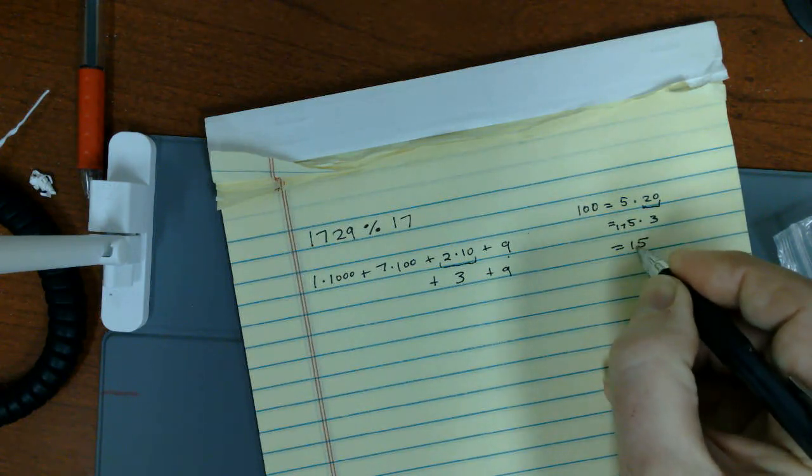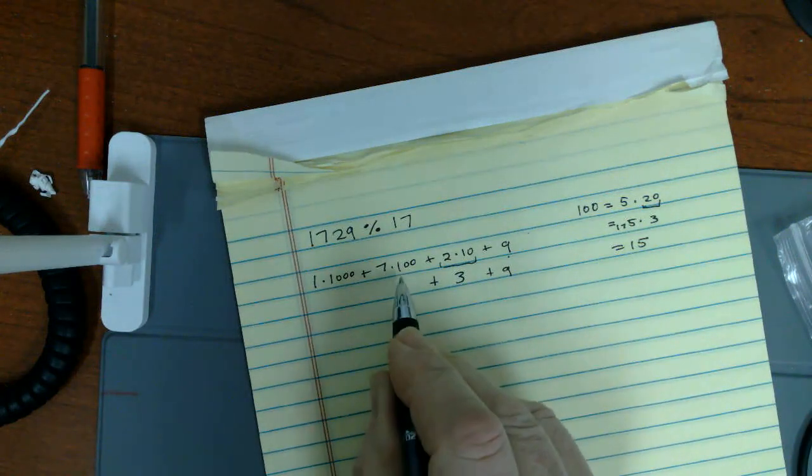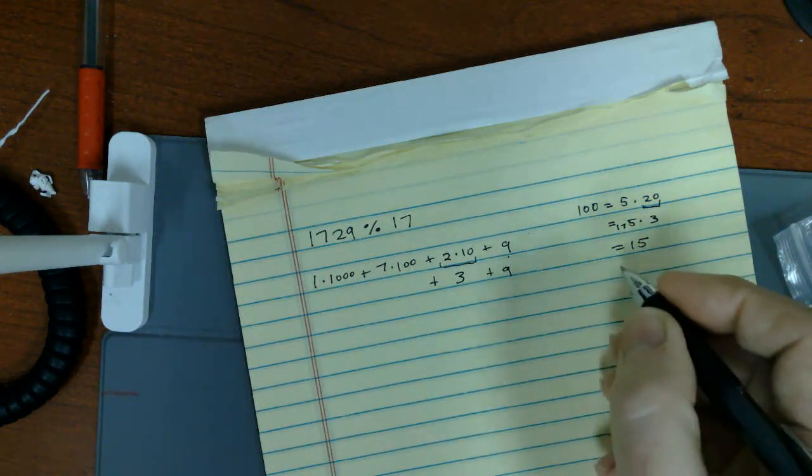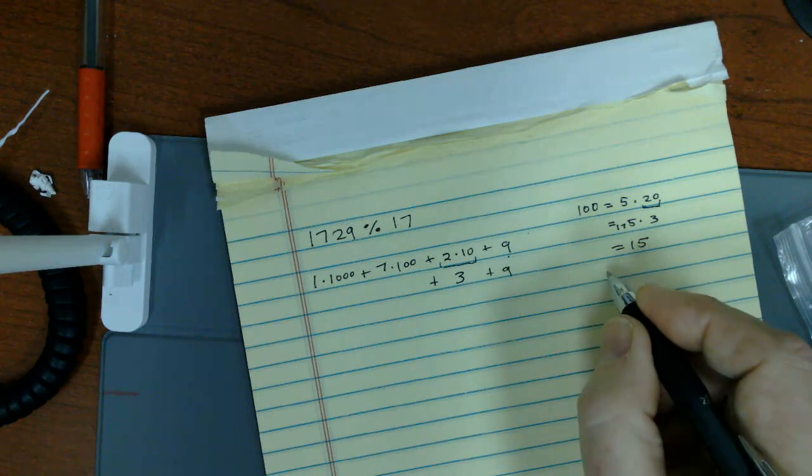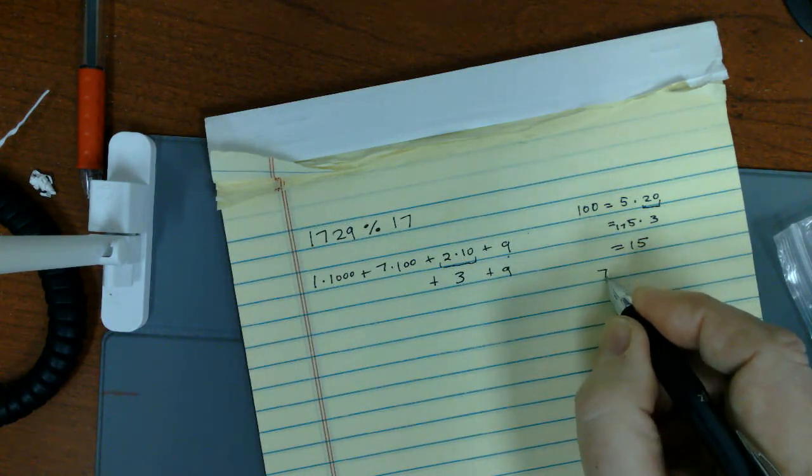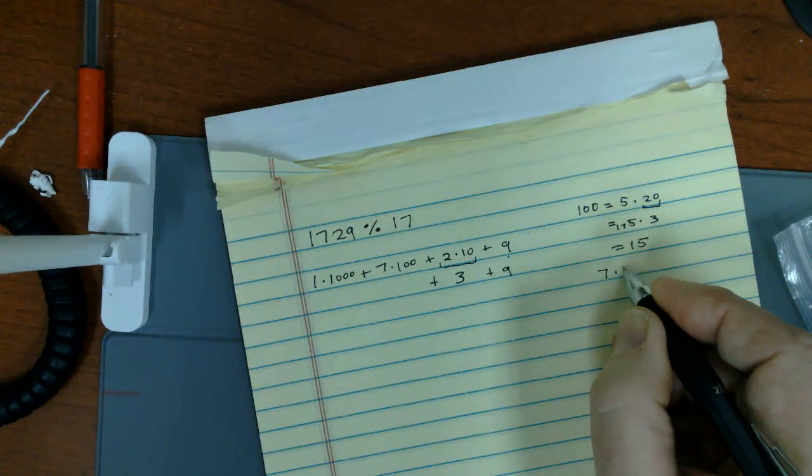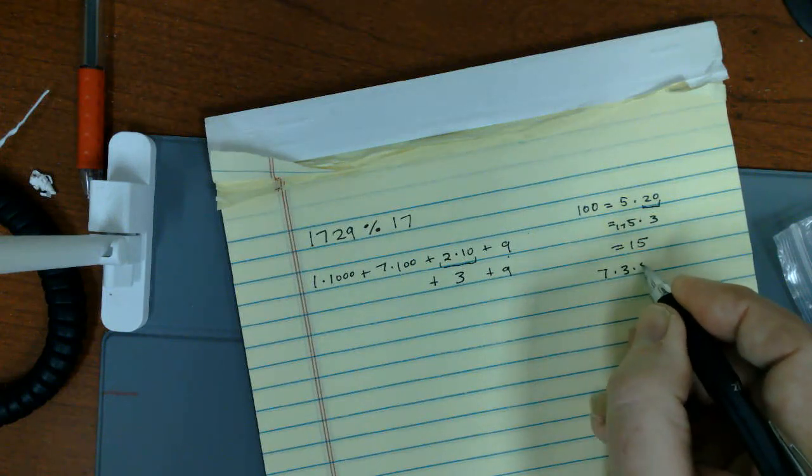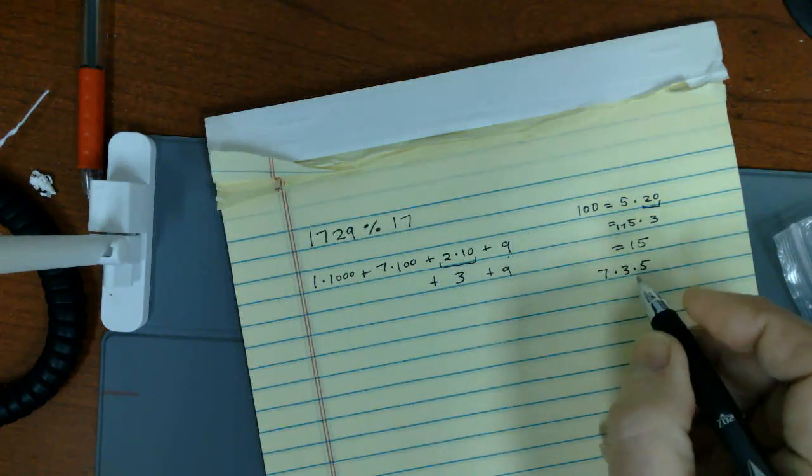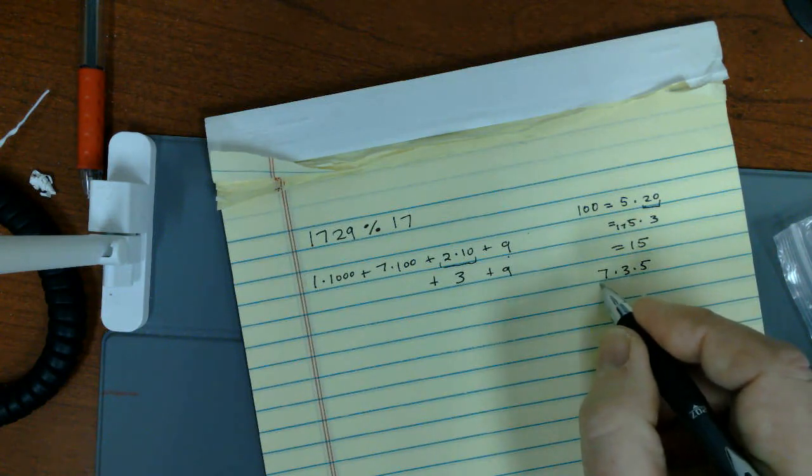So I take this 15. That would be a hundred times seven, but let's again be smart. Seven times 15 is seven times three times five. I want to take this mod 17.